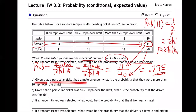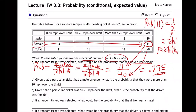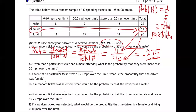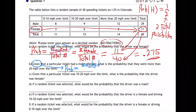Given that the particular ticket had a male offender, what is the probability they were more than 20 over the speed limit? Here's the deal for given: whenever they say given, that's a key word. The probability equals the number being asked on top, over the given number on the bottom. That changes the denominator. Given changes the denominator — that's the key thing you need to know.